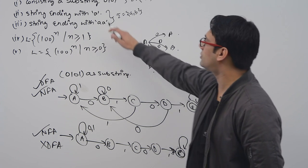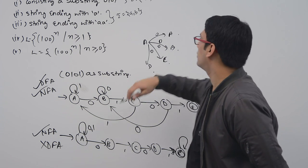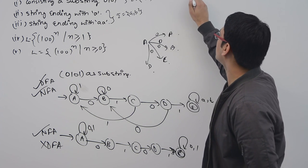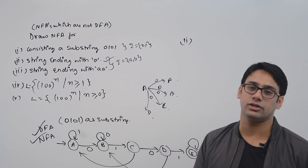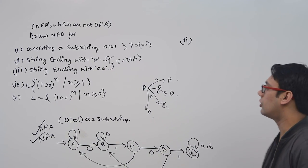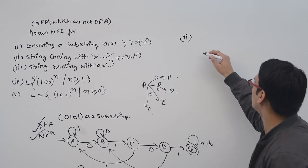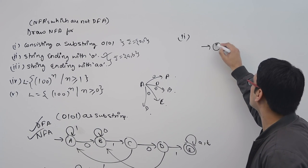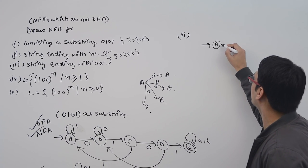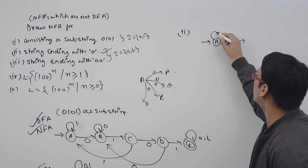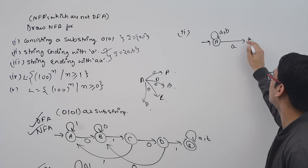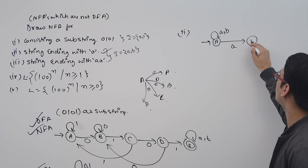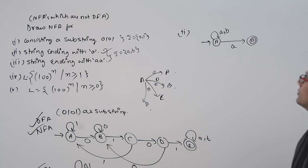The second problem is strings ending with single A over alphabet {A, B}. You can easily make a DFA for this, but I am only going to draw the NFA. This is the initial state A. If you get any number of A's or B's at the start, and then you get a single A, you go to state B and accept it. This is representing an NFA.